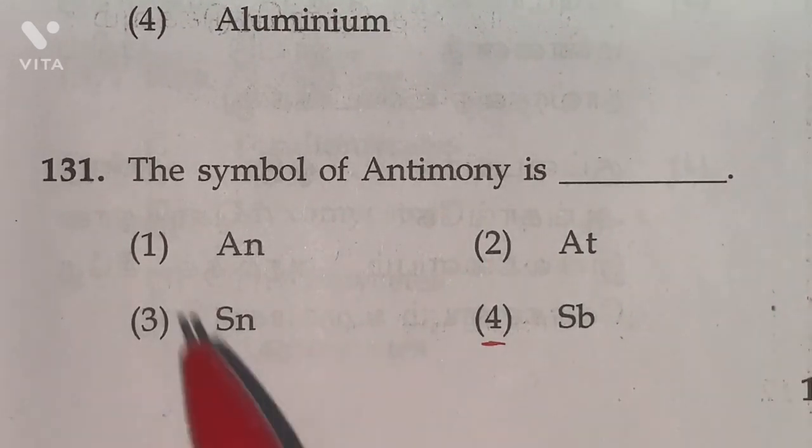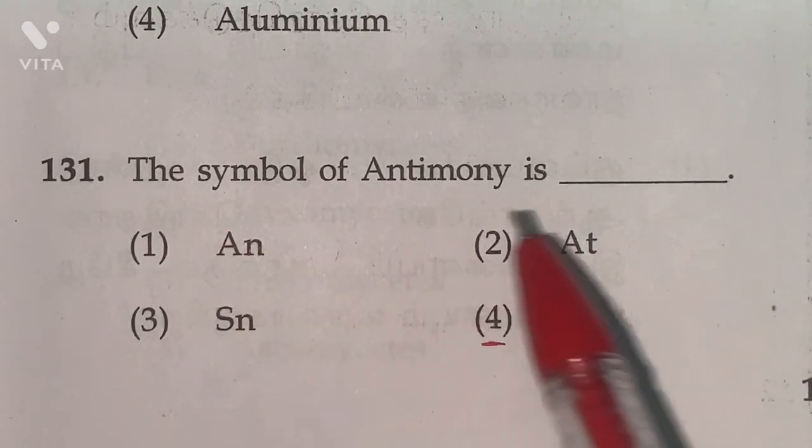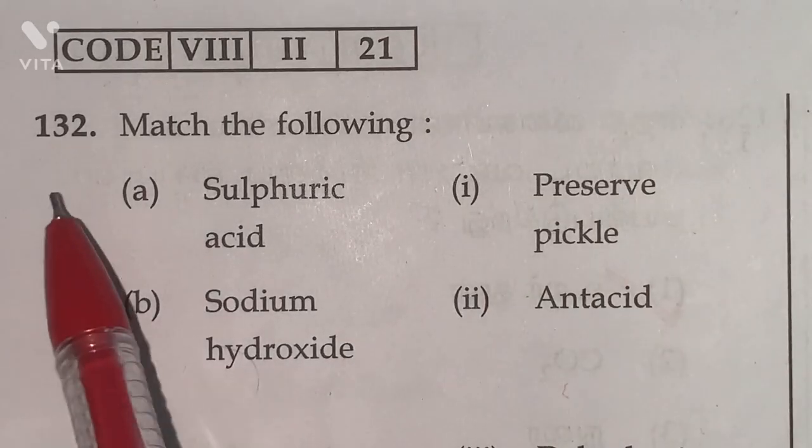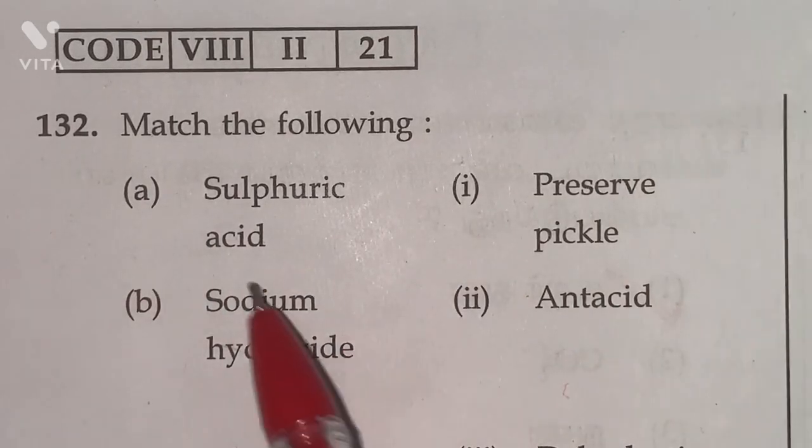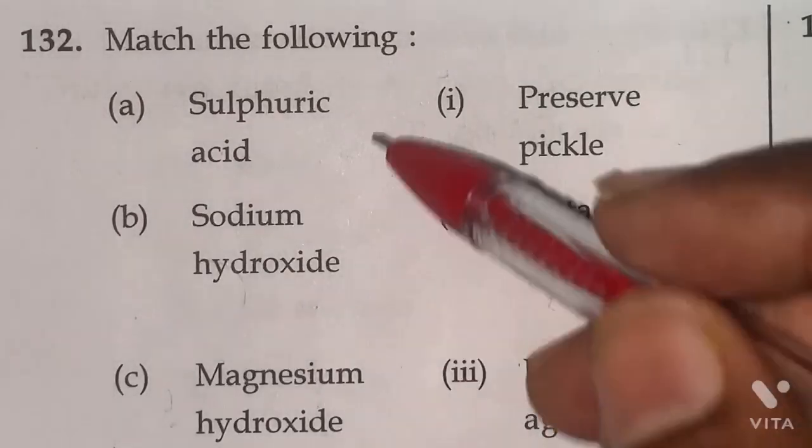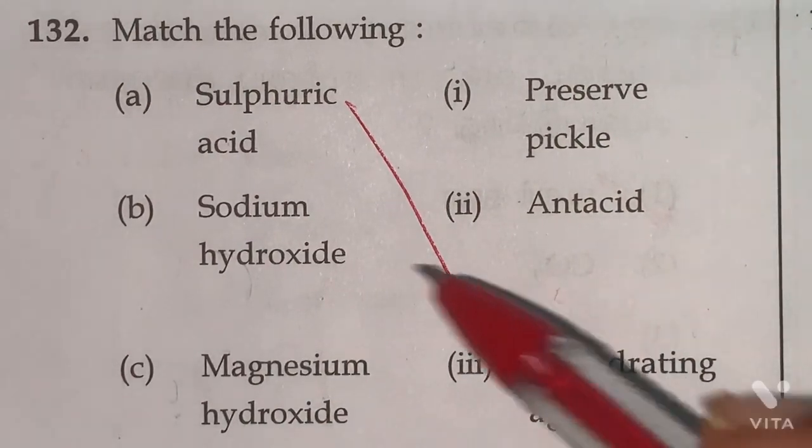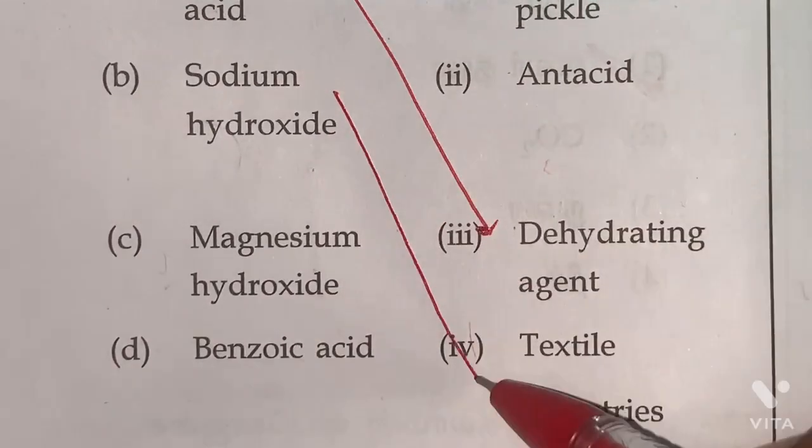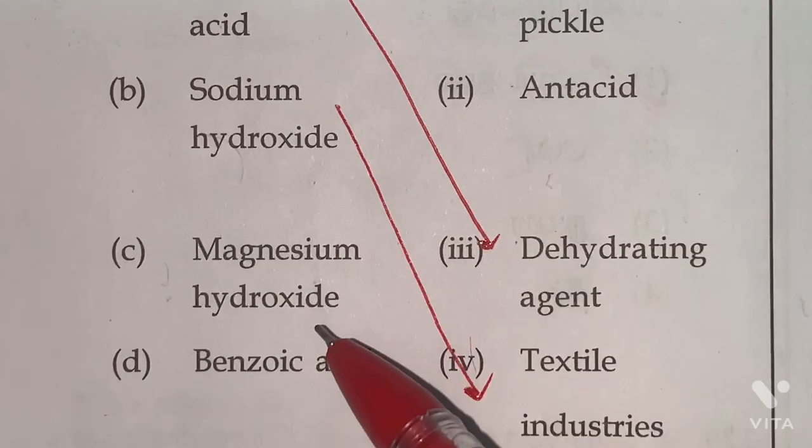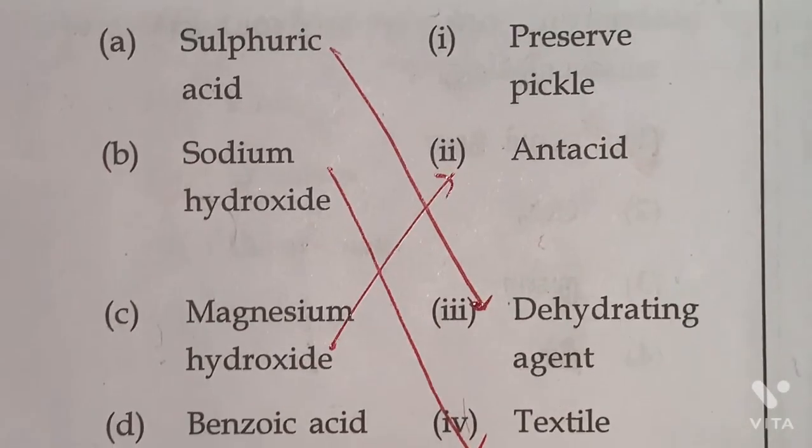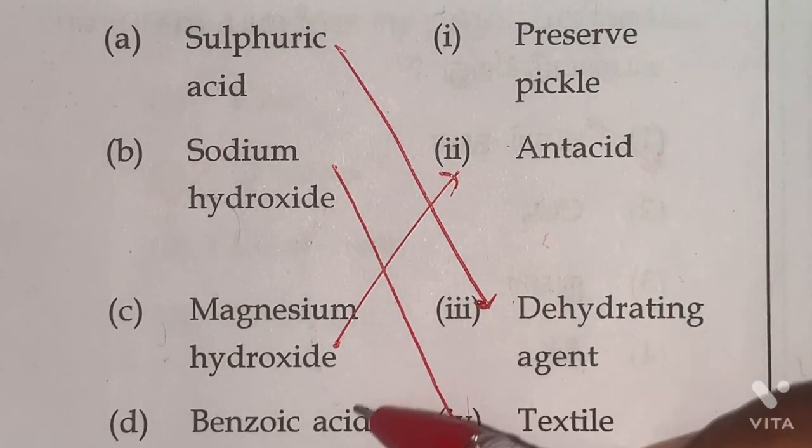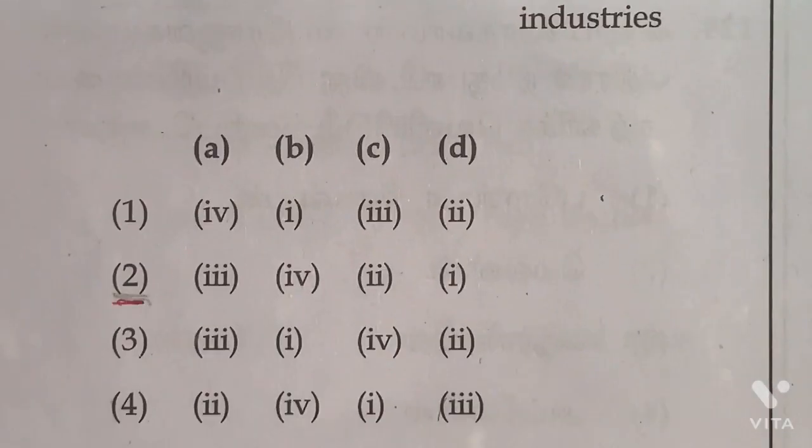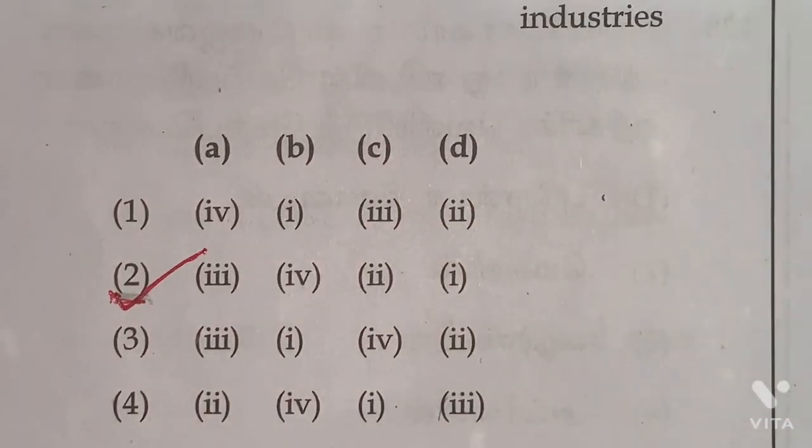131th. The symbol of antimony is Sb. Option 4th one is the right answer. Question number 132. Match the following. Sulfuric acid used as dehydrating agent, sodium hydroxide used in textile industries, magnesium hydroxide used as antacid, benzoic acid used as preservative. So according to this option, 2nd one is the right answer.